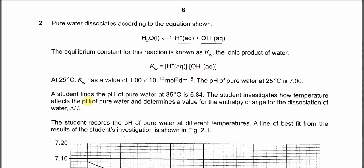At 25 degrees C, the Kw value is 1×10⁻¹⁴, and therefore the pH of pure water is 7, because pH is the negative log of the concentration of H⁺, and the concentration of H⁺ is 1×10⁻⁷, so we get pH 7.